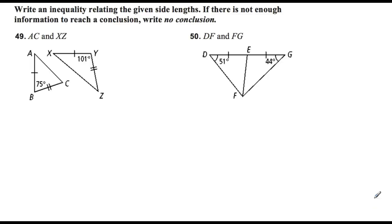Number 49. It says write an inequality relating the given side links. If there's not enough information to reach a conclusion, write no conclusion. We did some of these yesterday. This is all going back to the hinge theorem. So remember with the hinge theorem, we need to have two sides congruent. I've got this side congruent to this side. I've got this side right here. YZ is going to be congruent to BC right there. So I've got two congruent. Now you look at the middle angle here, or the included angle. If they're congruent, the two triangles are congruent by side angle side. But in this case they're not.